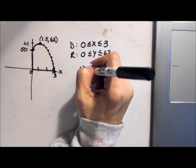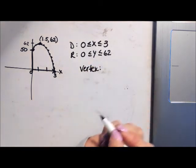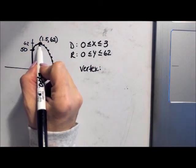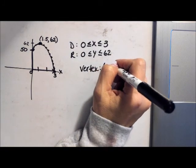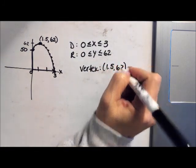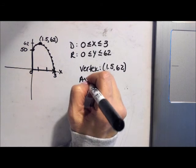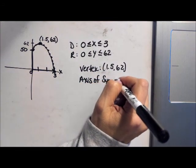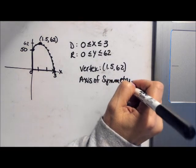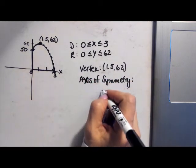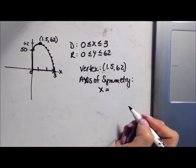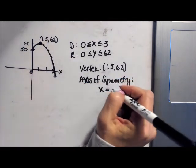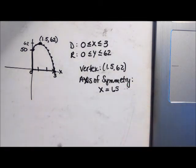Okay, what is the vertex of this quadratic? Well the vertex is the highest, on this one it's the highest point. It would be 1.5 comma 62. What is the axis of symmetry? Axis of symmetry has an x in it. x means x equals. What is the x value of my vertex? It's 1.5. So there's my axis of symmetry.